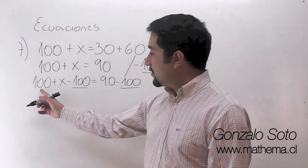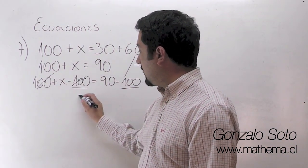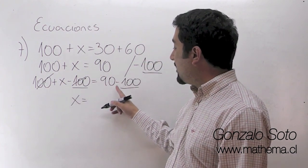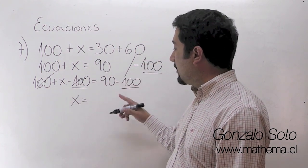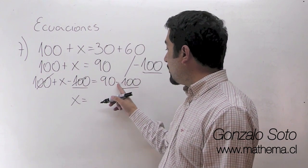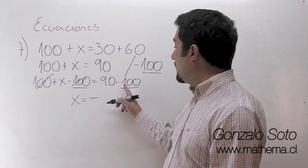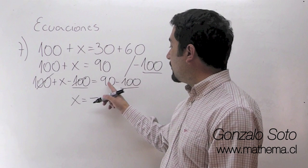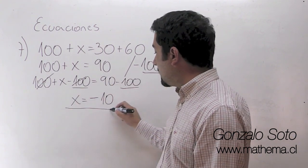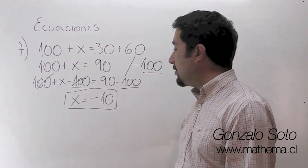Números iguales con distintos signos, esto es 0. X es igual a 90 menos 100. Números con distintos signos, el mayor es negativo, por lo tanto el resultado es negativo. 100 menos 90 es 10. Entonces x vale menos 10.